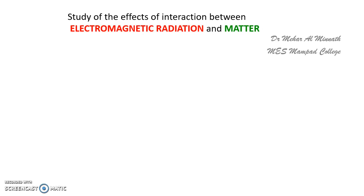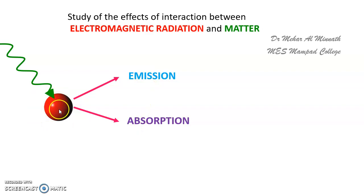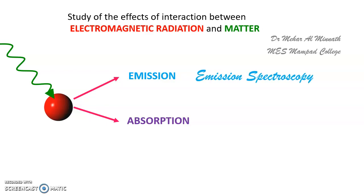We have got different branches of spectroscopy. When a matter is hit by electromagnetic radiation, either emission can happen or absorption can happen. When either emission or absorption happens, something happens within the molecule, within the atom, within the matter. When emission happens, we call it emission spectroscopy, and when absorption happens, we call it absorption spectroscopy. These are the two main types, and there are different branches within each.